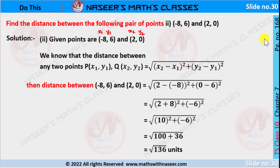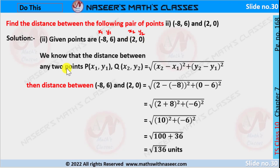Page 168, chapter 7, coordinate geometry, 2nd problem. We have to find the distance between the points minus 8 comma 6 and 2 comma 0. The xy coordinates of the first point are x1, y1 and the second point are x2, y2. The distance formula is square root of (x2 minus x1) all squared plus (y2 minus y1) all squared. Now we substitute the values.